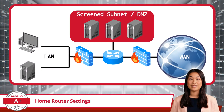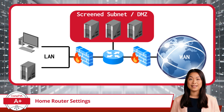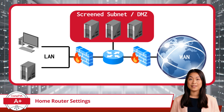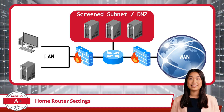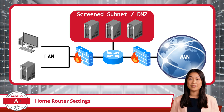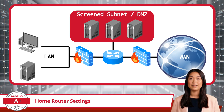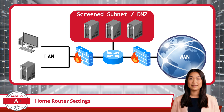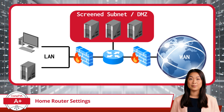Last but not least, let's talk about creating a screened subnet, also known as a DMZ, or demilitarized zone. Imagine your network as a secure building with critical systems inside, and a fenced-off area outside where you can place devices that need to interact with the public, like web servers or email servers. This DMZ allows those devices to engage with the outside world while keeping them at a safe distance from your main network. If anything in the DMZ gets compromised, it's confined to that outer area, preventing intruders from reaching the heart of your network.